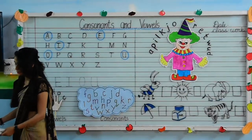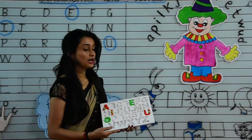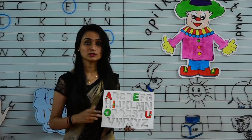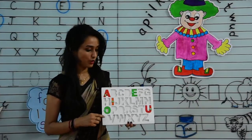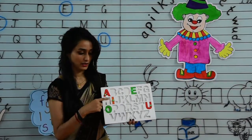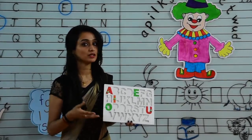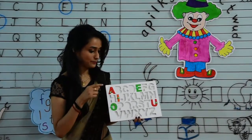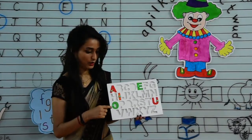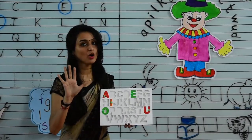We will see with the help of these tools. First, what are vowels? As I told you, there are 5 vowels. What are those 5 vowels? The vowels are A, E, I, O, U. These are the 5 vowels.